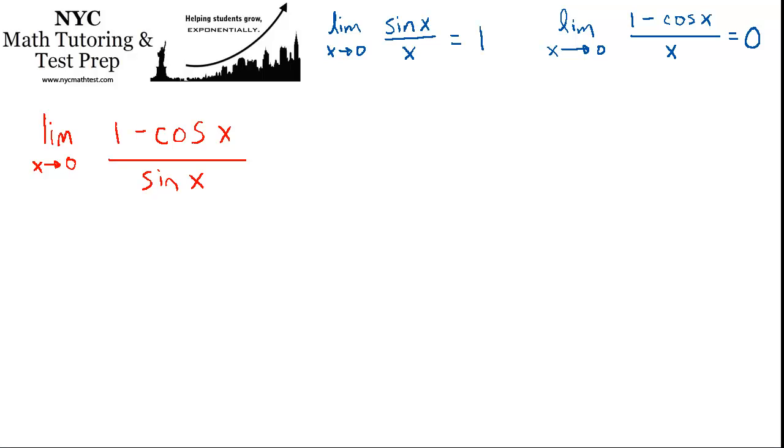Okay, so the problem we're solving is limit as x approaches 0 of 1 minus cos x over sin x.